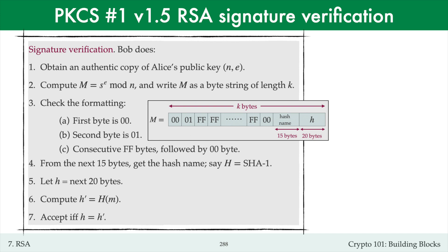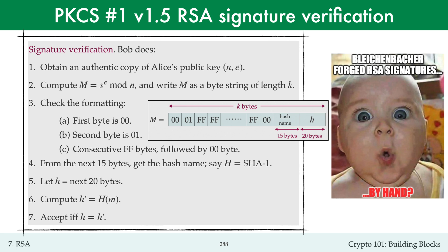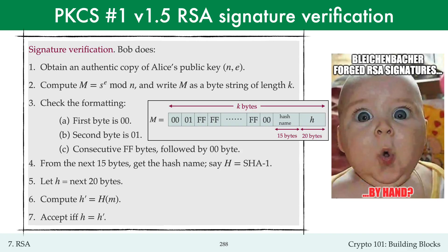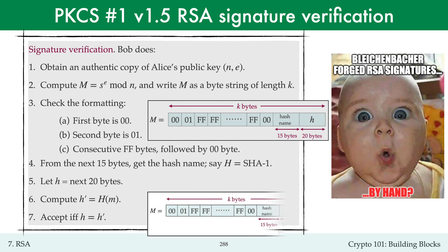However, there is a very subtle omission in the description. This subtle omission, discovered by Daniel Bleichenbacher in 2006, led to faulty implementations which allowed RSA signatures to be forged by hand. You might pause the video now and take a few minutes to see if you can spot this very subtle omission in the verification description. The omission was an explicit check that there are no leftover bytes after H. In other words, the string M does not have extra bytes appended. One way to prevent the attack is to check that there are no bytes to the right of H.